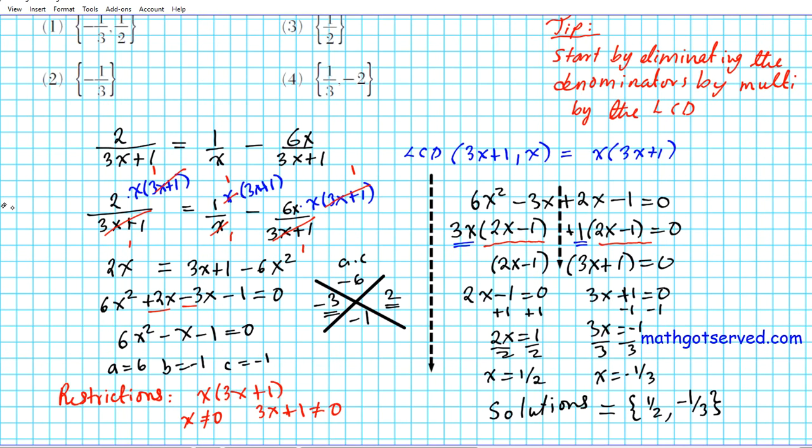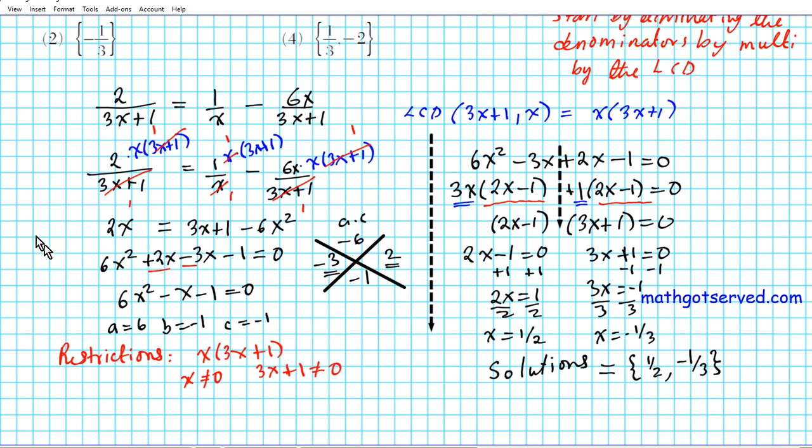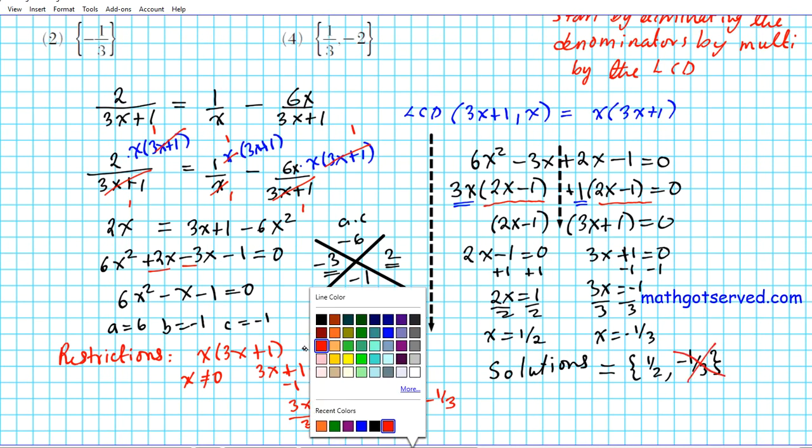If 3x plus 1 cannot be 0, that automatically tells us that, subtracting 1 from both sides, 3x equals negative 1, divide by 3. That tells us that x cannot be negative 1/3. Oh, we have a problem, ladies and gentlemen. This answer negative 1/3 is extraneous.